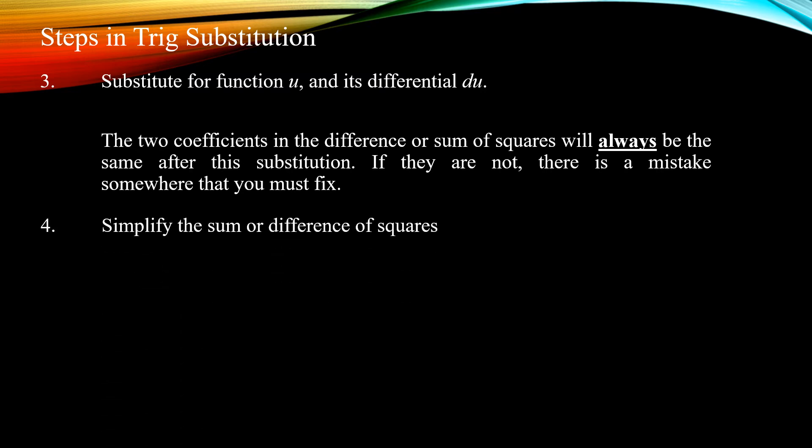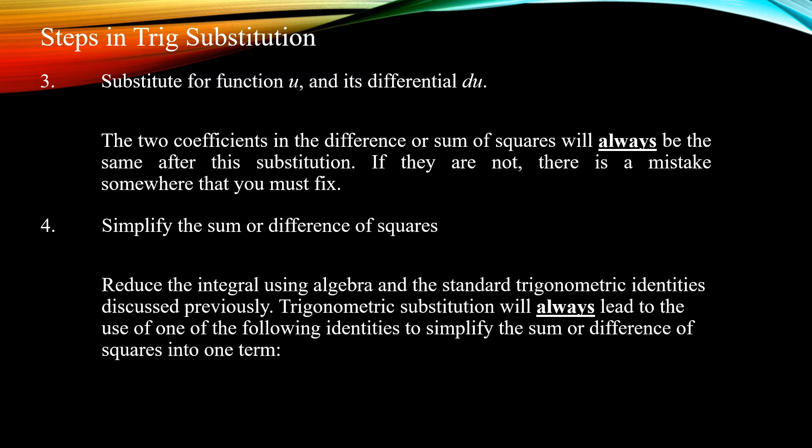You simplify the sum or difference of squares: because the two coefficients match up, you factor out that coefficient and are left with a simpler expression that is a Pythagorean identity. The two relevant identities are sine squared plus cosine squared equals 1, or tan squared plus 1 equals secant squared. Using one of these rearranged, you simplify the difference or sum of squares into a single term.